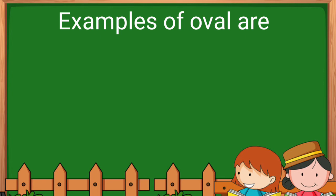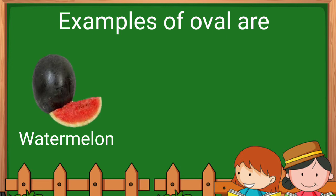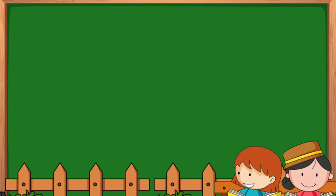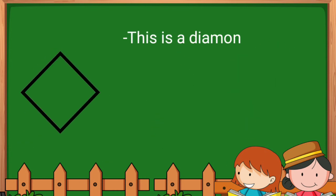Examples of oval are watermelon and balloon. These are all examples of an oval. Diamond. This is a diamond.